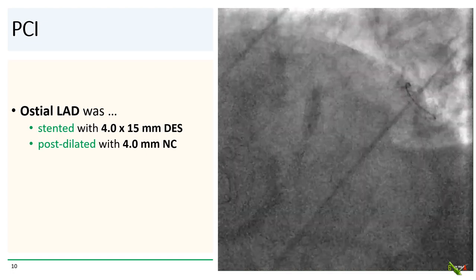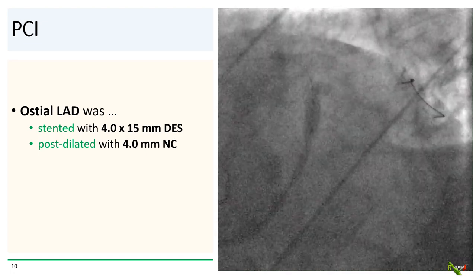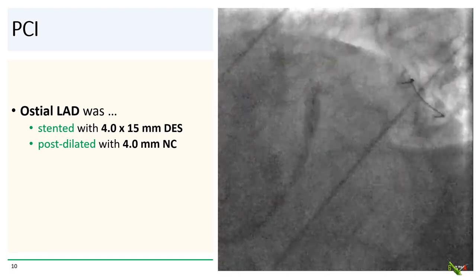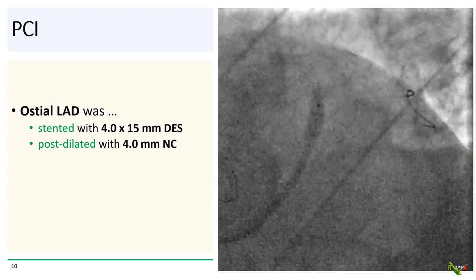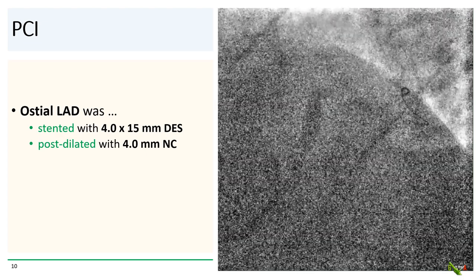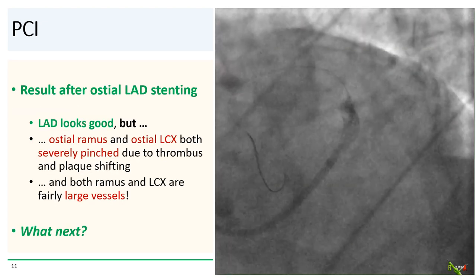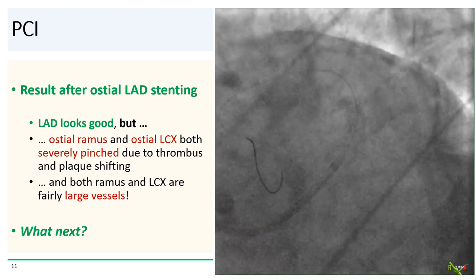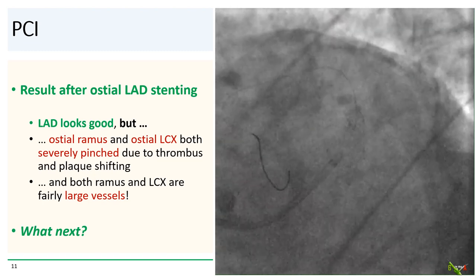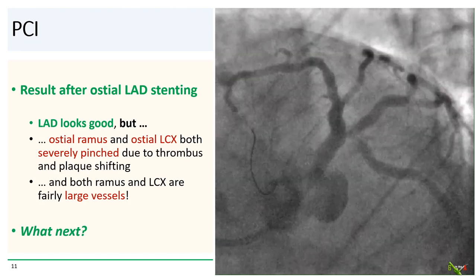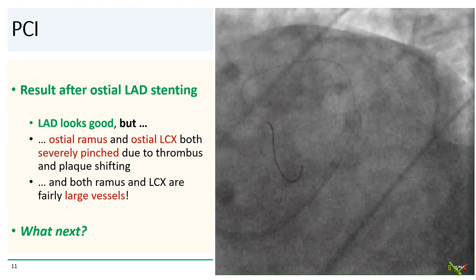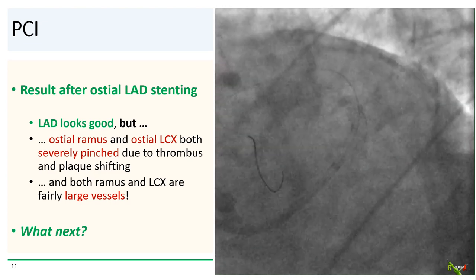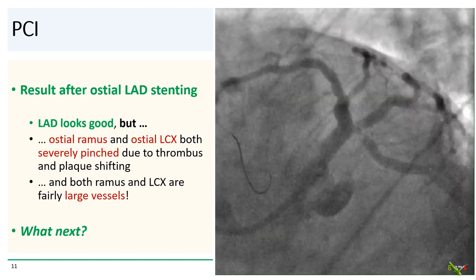So we stented the ostial LAD with a 4.0 by 15 millimeter drug-eluting stent, probably slightly protruding into the left main, and post-dilated with a 4.0 millimeter NC balloon. After stenting the LAD, the LAD looked great, but both the ostial ramus and the ostial circ were now severely pinched, probably due to thrombus and plaque shifting. Both the ramus and circ are quite large vessels, and remember the circ is dominant.